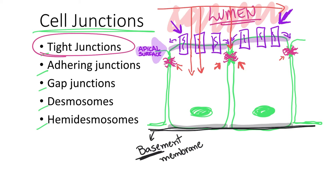In summary, tight junctions are web-like proteins that stitch two plasma membranes together. They are found close to the apical surface of the cell and are responsible for sealing off passageways between two adjacent cells. They also inhibit the lateral movement of proteins present in the apical surface of the cell.